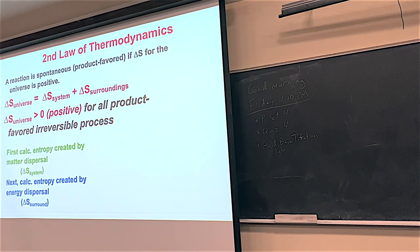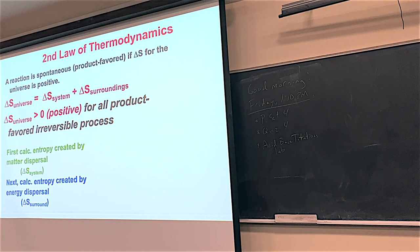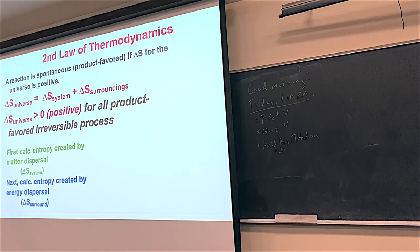We are going to talk about what I would argue is the most important law of all physical science — not just chemistry, but physics, engineering, and everything biological that revolves around energy. It's the second law of thermodynamics. There are three laws. The first law: energy can't be created or destroyed. The third law: the only time you'll have zero entropy is for a perfectly formed crystal of an element at zero Kelvin, which makes zero entropy very rare.